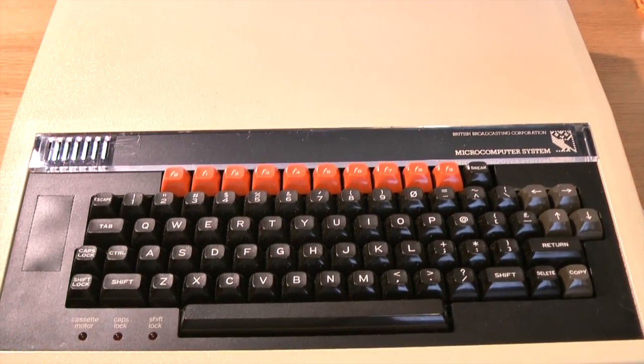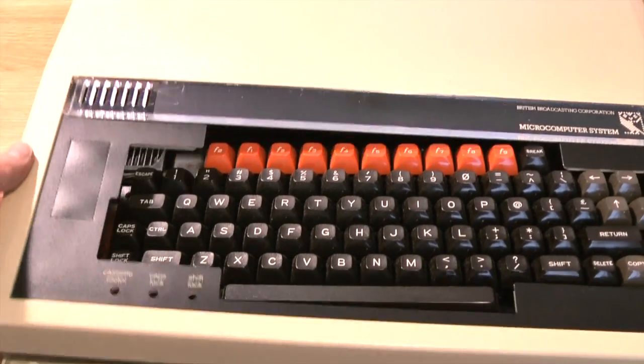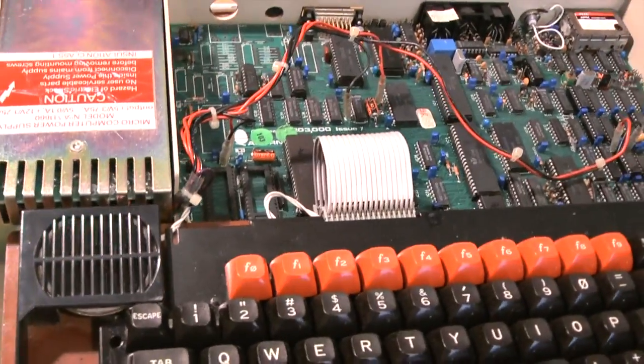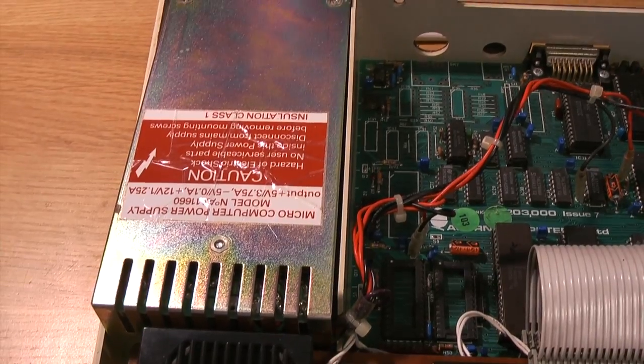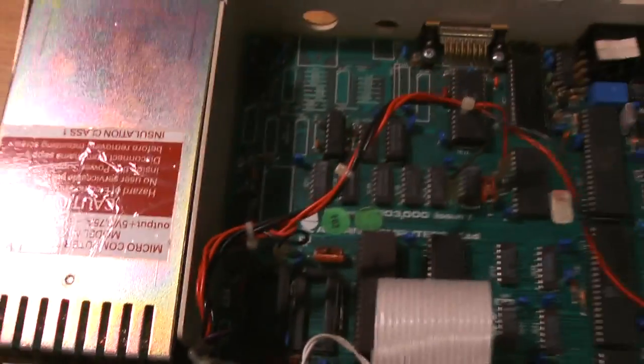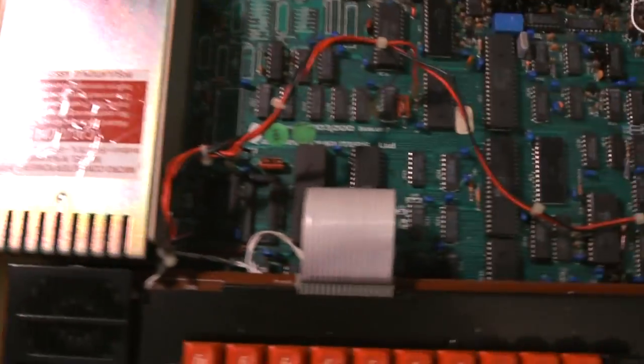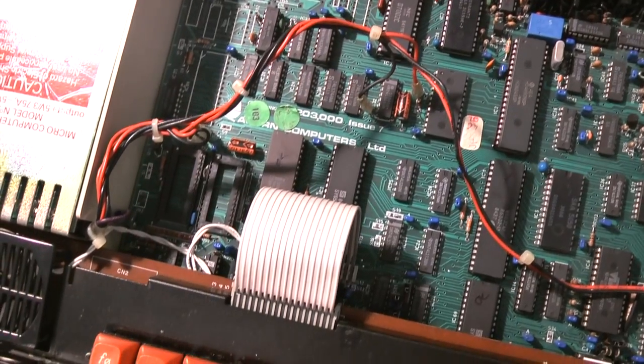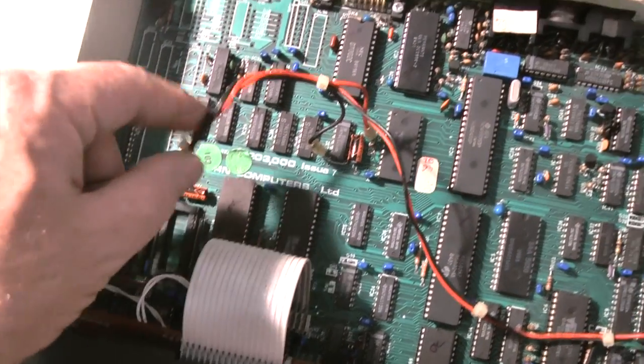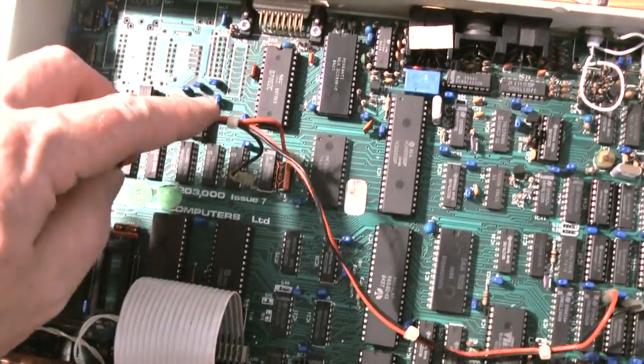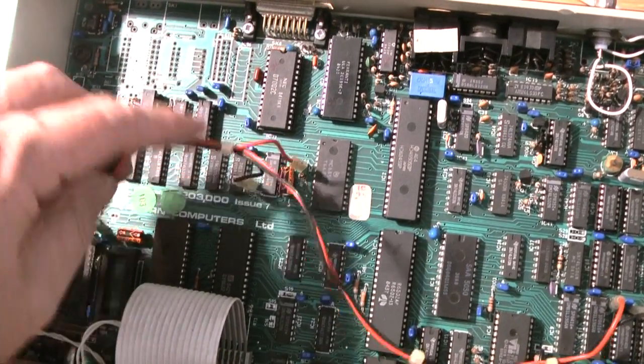Once you've removed those four screws, the lid of the thing will simply remove like so to reveal the innards. The power supply is this little chap in the rear left corner. Best thing is, before you remove anything, take a picture to see where the power leads go. They are actually marked on the PCB.